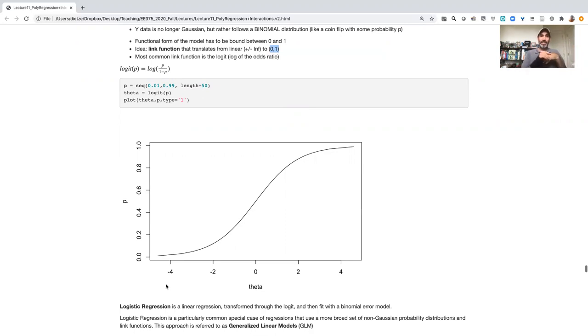This idea, important to note, as kind of alluded at the beginning, is a special case of a more broad set of problems called generalized linear models, where we can use a wider range of probability distributions other than just the Gaussian.